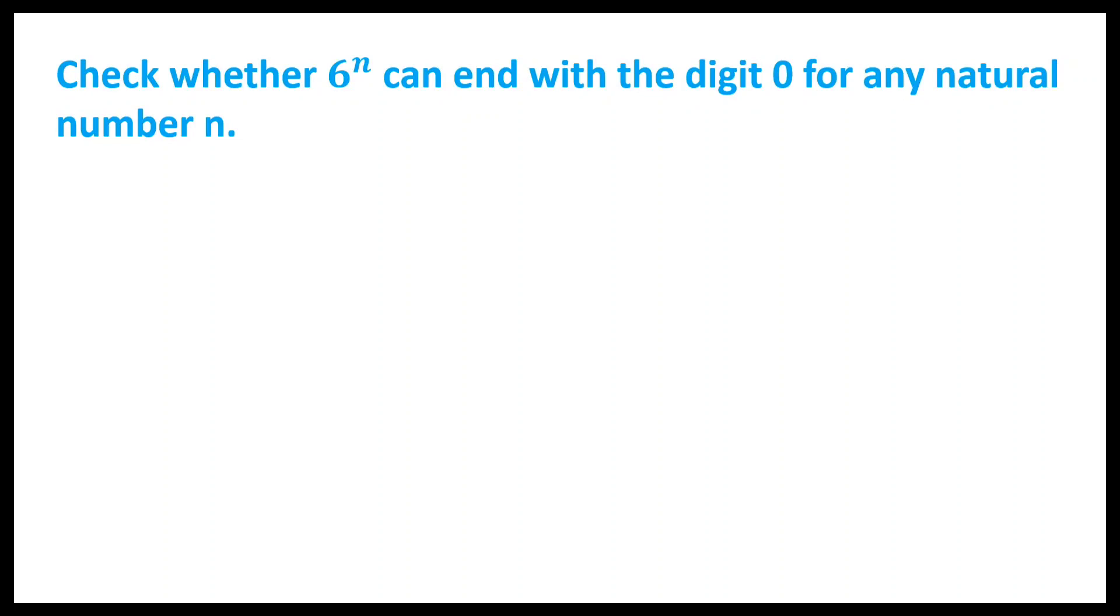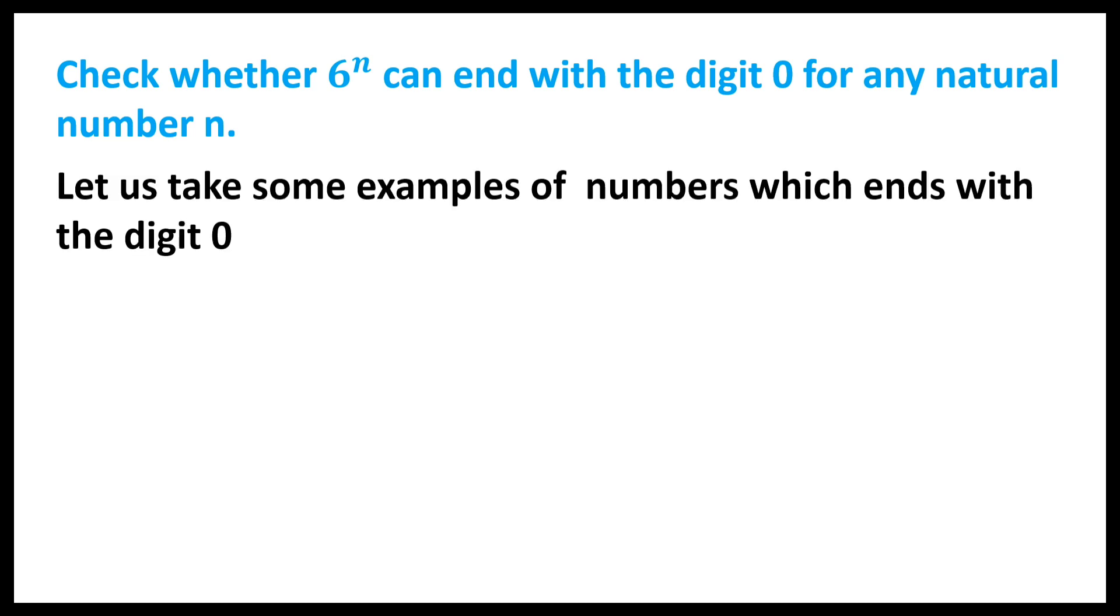Check whether 6^n can end with the digit 0 for any natural number n. Let us take some examples of numbers which end with the digit 0.